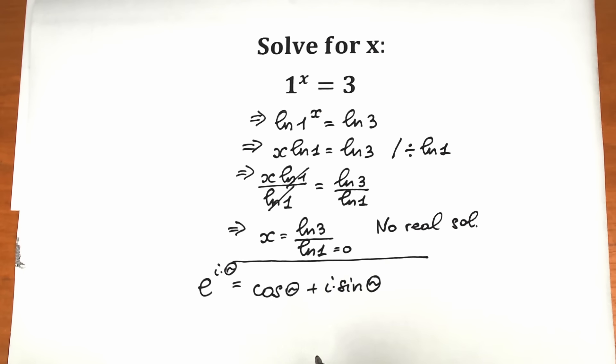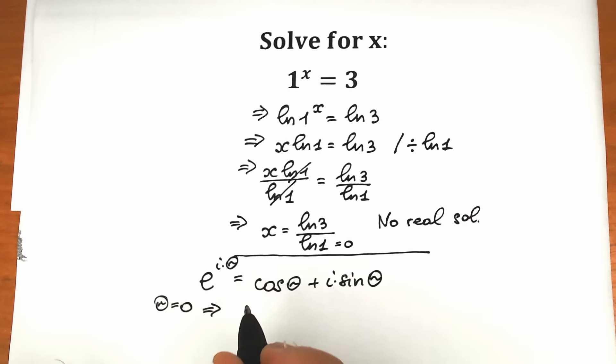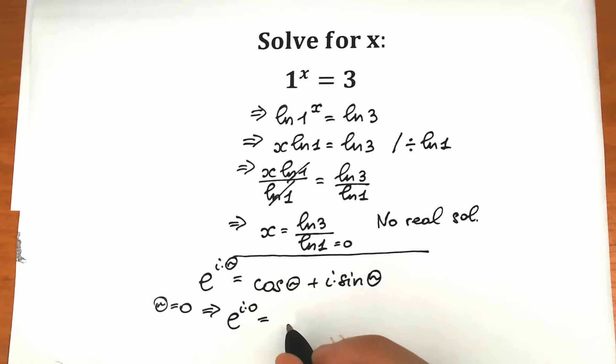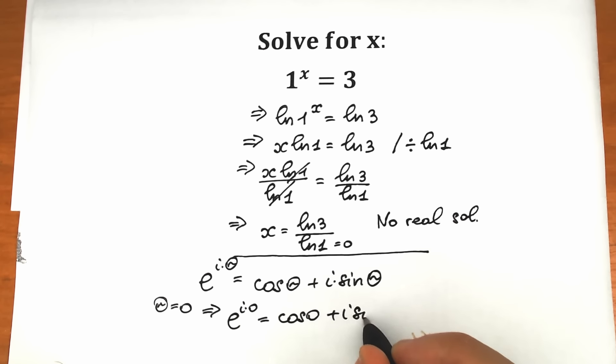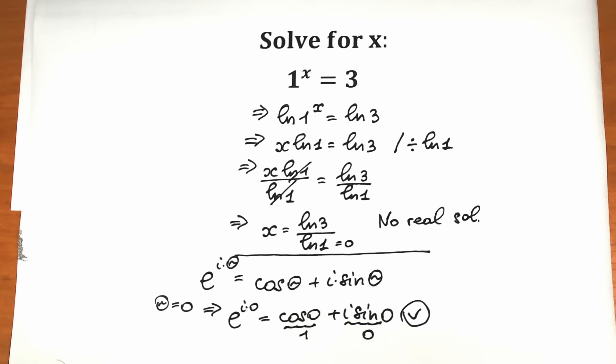This is an absolutely correct expression. We can check it — for example, let theta equal zero. Then e to the power i times zero equals cosine zero plus i sine zero. That gives us e to the power zero equals 1, and on the right side we have 1 plus zero. So this expression is absolutely correct.